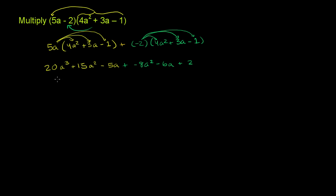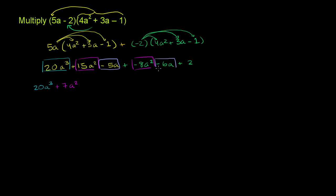Now we combine like terms. We only have one third-degree term: 20a to the third. Then looking at the a squared terms, we have 15a squared and negative 8a squared. 15 minus 8 is 7, so that gives us 7a squared. For the a terms, we have negative 5a plus negative 6a, which is negative 11a. And finally the constant term is positive 2. We are done — all like terms have been combined.